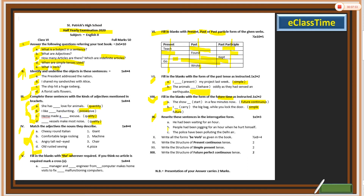Number nine: rewrite these sentences in the interrogative form. Interrogative means asking a question. For example: 'He had been waiting for an hour' — make it a question. Number B: 'People had been jogging for an hour when he hurt himself.' Next: 'The police have been polluting the Delhi air.' Rewrite all of these in interrogative form.